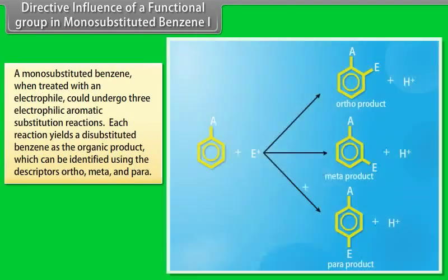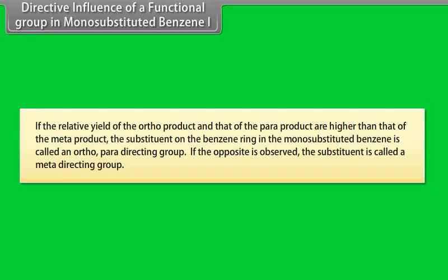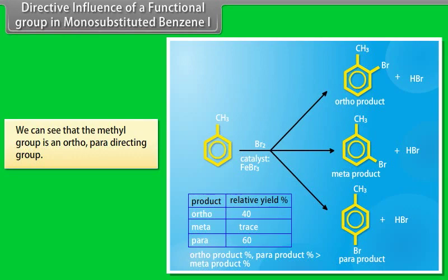Directive influence of a functional group in monosubstituted benzene 1. A monosubstituted benzene, when treated with an electrophile, could undergo three electrophilic aromatic substitution reactions. Each reaction yields a disubstituted benzene as the organic product, which can be identified using the descriptors ortho, meta and para. A is equal to any substituent, E plus is equal to electrophile. If the relative yield of the ortho product and that of the para product are higher than that of the meta product, the substituent on the benzene ring in the monosubstituted benzene is called an ortho-para directing group. If the opposite is observed, the substituent is called a meta directing group. Look at this example. We can see that the methyl group is an ortho-para directing group.